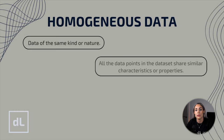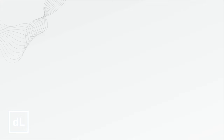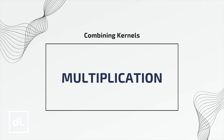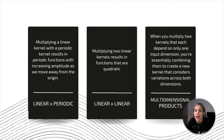The kernels discussed so far are useful when dealing with homogeneous data types — data where all points share similar characteristics or properties. However, if you have multiple types of features and want to regress on all of them together, one common approach is to add or multiply kernels together. Multiplying kernels is a standard method to combine two kernels, especially when they are defined on different inputs to your function — roughly speaking, multiplying two kernels can be thought of as an AND operation.